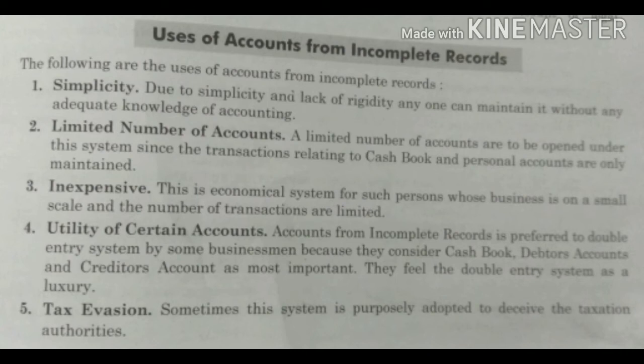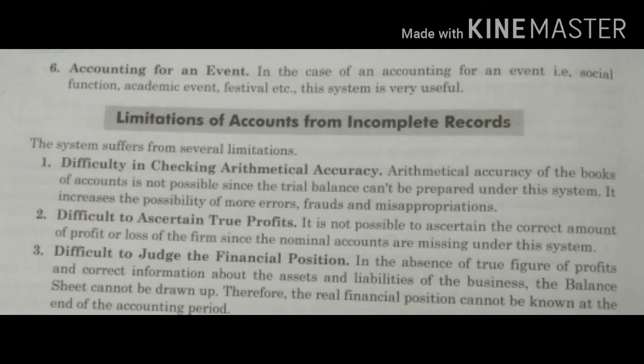Fifth merit is tax evasion: कई बार ये accounts इसलिए भी बना लेते हैं कि सही income का पता न लगे और tax में घपला कर सकें, अपने tax को बचा सकें। Last merit is accounting for an event: जो events होती हैं — like कोई social function, academic event, या festival — उन occasions में single entry system beneficial होता है। एक event का हिसाब किताब रखना under accounts from incomplete records very simple है।